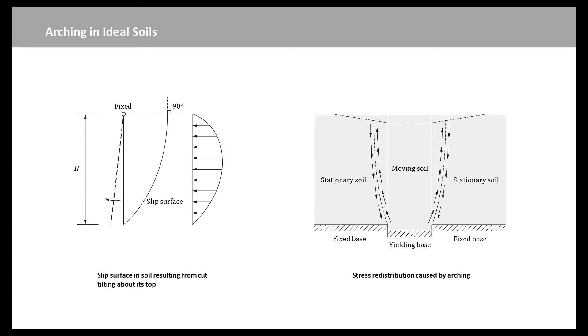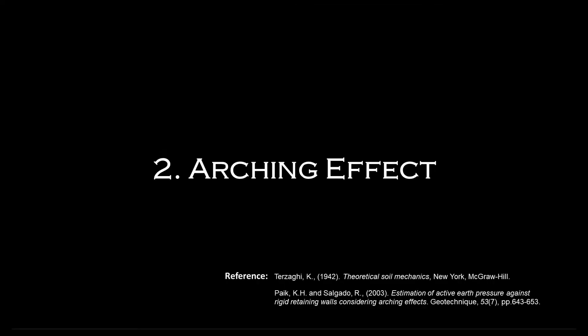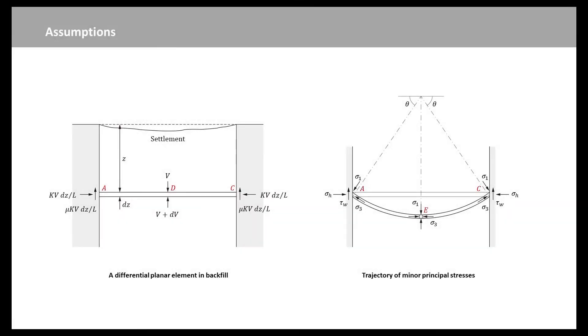In order to investigate the state of stress in the retained soil based on arching theory, let us assume that two parallel rigid vertical cuts retain granular soil, and that the settlement of the retained soil is large enough to fully induce friction between the cuts and the soil. It follows that the weight of any differential planar element in the retained soil is partially supported by the differential resistance at the cuts, and the differential resistance causes changes in the direction of the principal stresses acting on the planar element.